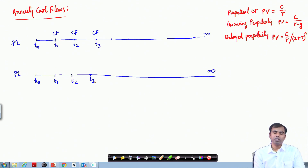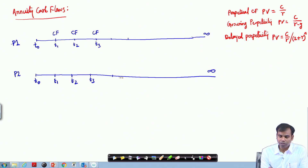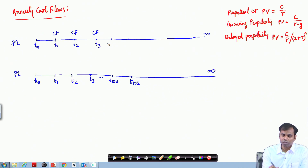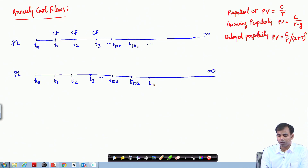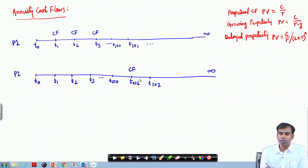The difference in Project 2 is that the cash flow occurs only after a delay — let us say the first cash flow arrives at T101, meaning cash flows start from T101 onward, i.e., after a delay of 100 years.